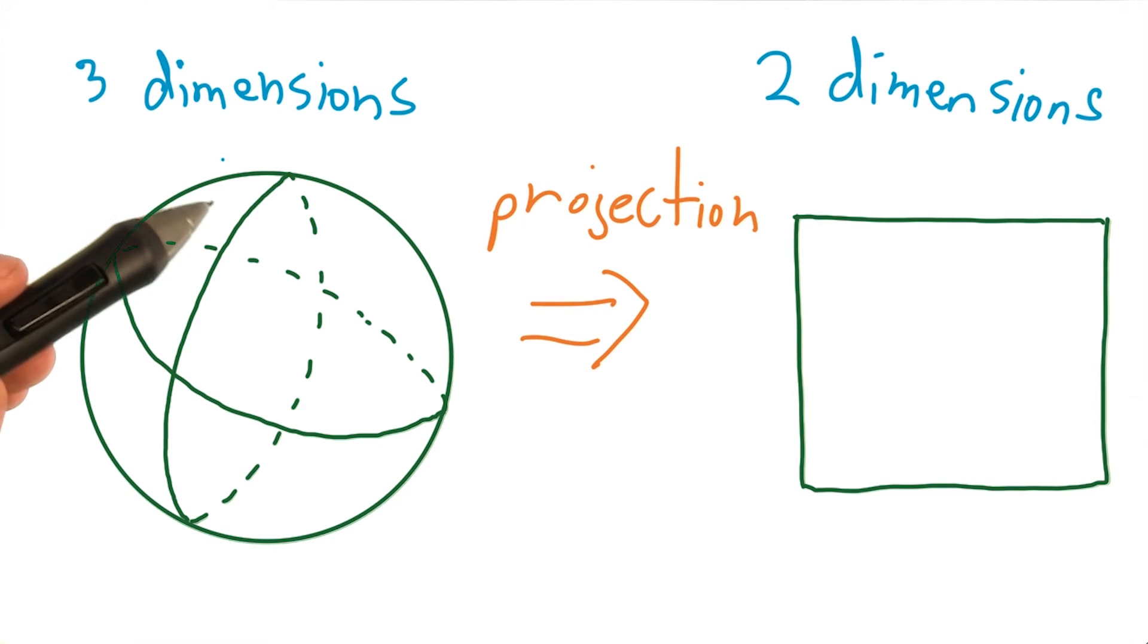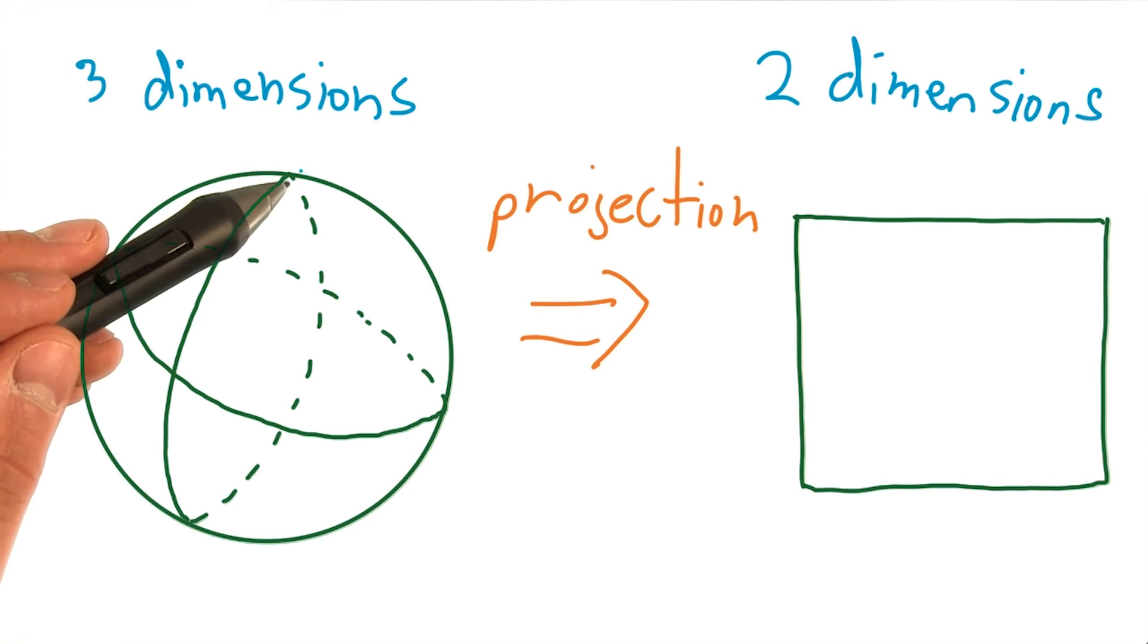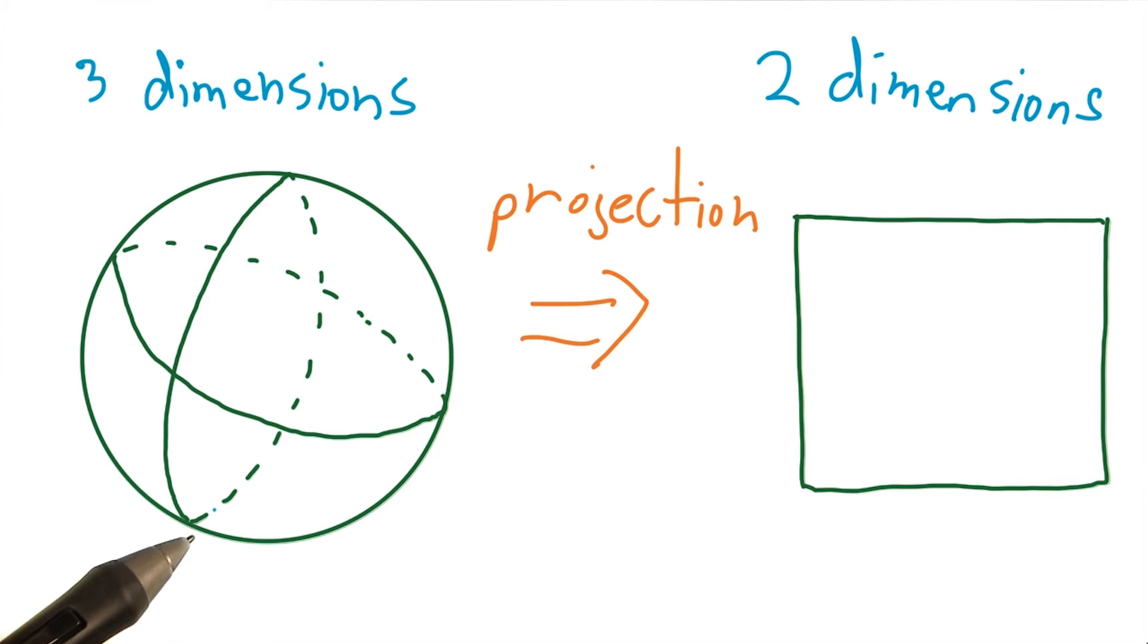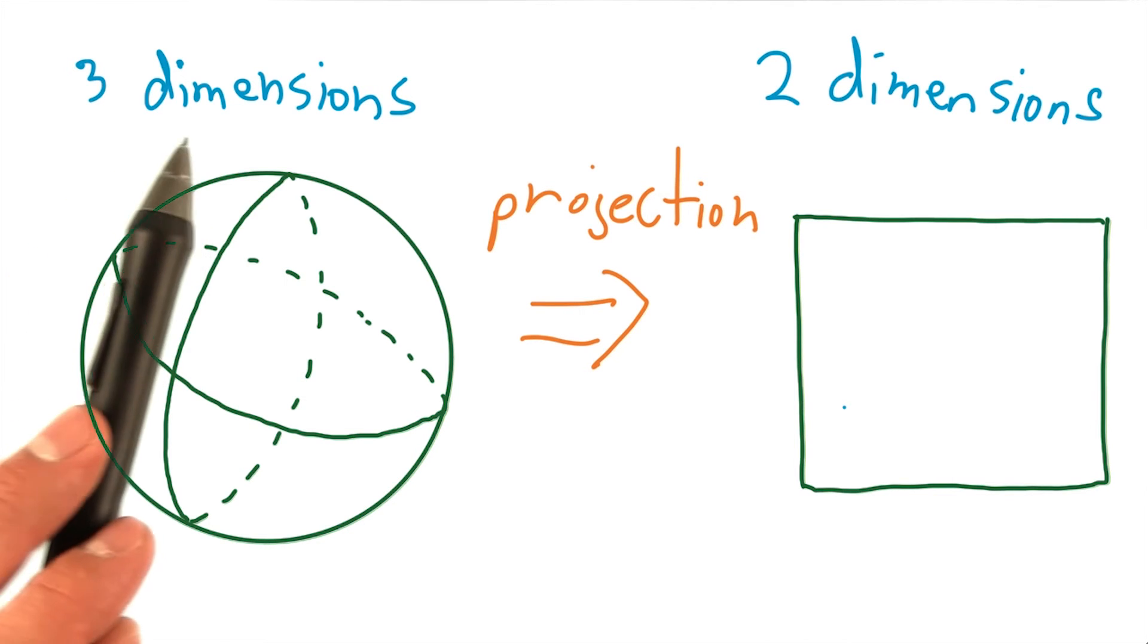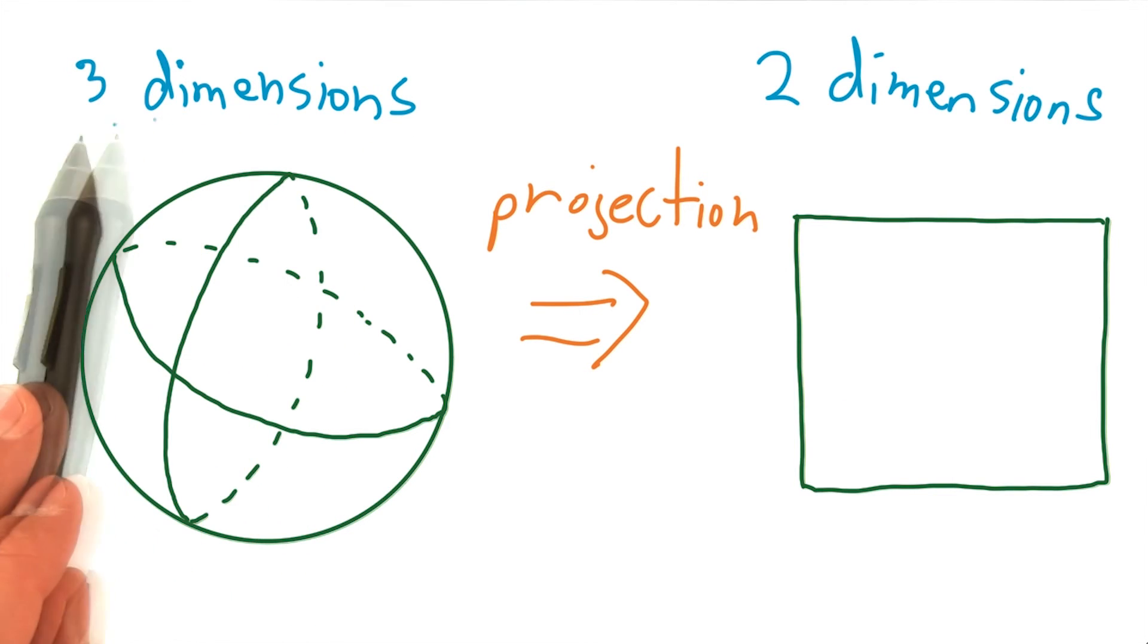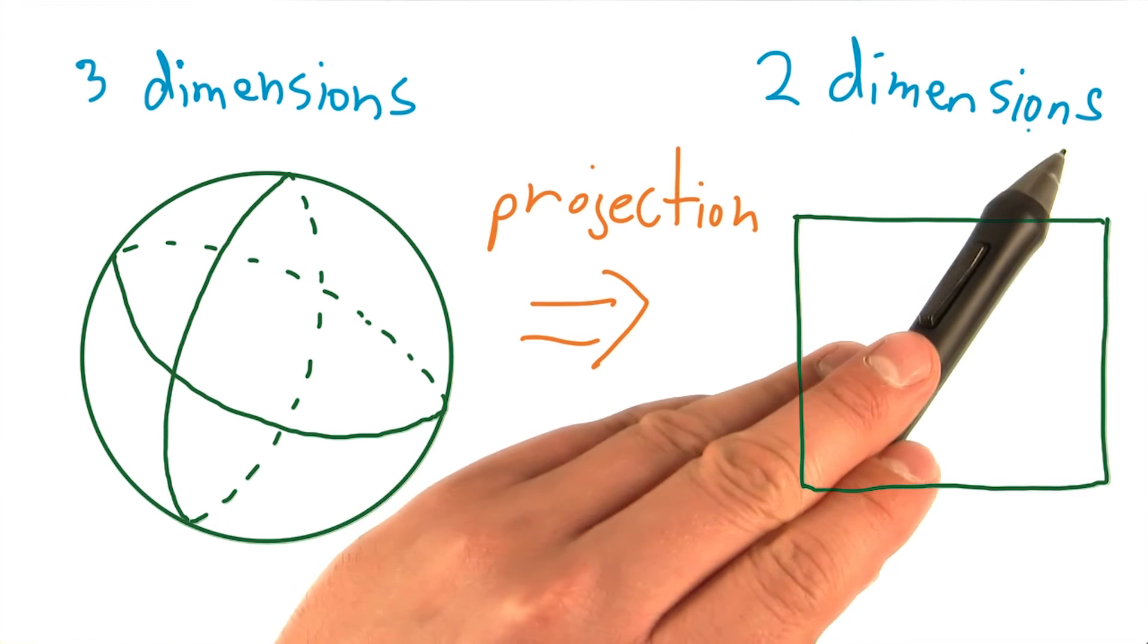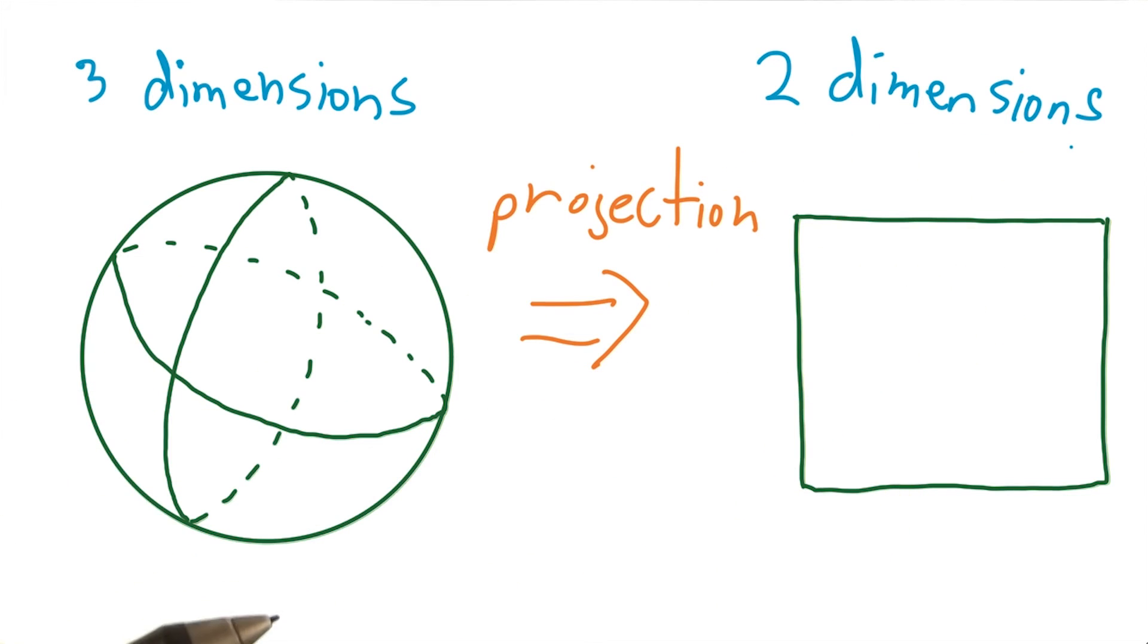The act of projection can be thought of as cutting the surface off of a three-dimensional object, or globe, and trying to flatten it out into two dimensions. And there's never a perfect way to represent something in greater dimensions in a lower dimension without some loss of information or distortion.